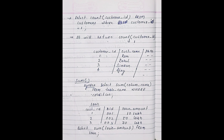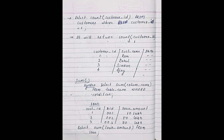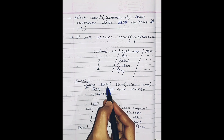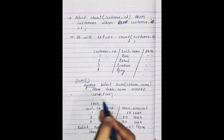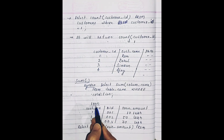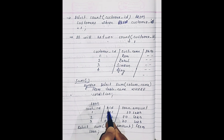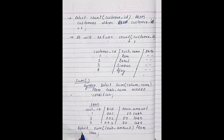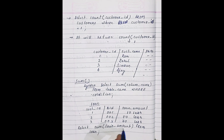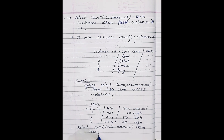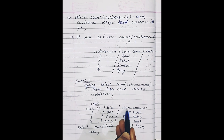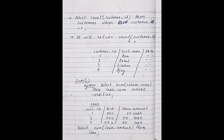Now moving ahead to the sum function. The sum function returns the sum of all values of the selected column. The syntax is: SELECT SUM(column_name) FROM table_name WHERE condition. For example, there is a table named loan with column names like cust_id, bank_id, and loan_amount. The query SELECT SUM(loan_amount) FROM loan will return the sum of all records from the loan amount column.